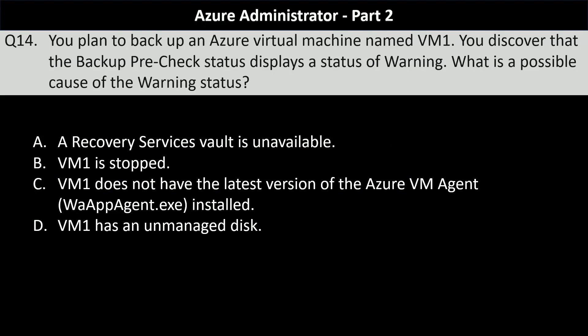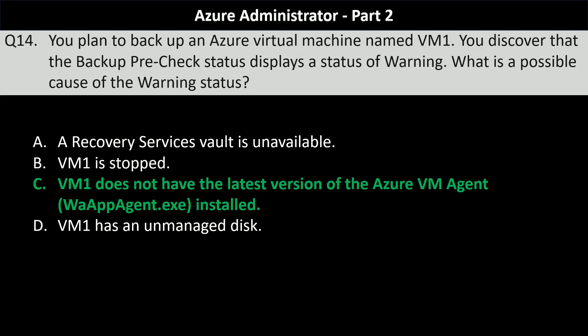Next question. You plan to back up an Azure virtual machine named VM1. You discover that the backup pre-check status displays a warning. What is the possible cause of the warning status? Your options are: a recovery services vault is unavailable, VM1 is stopped, VM1 does not have the latest version of the Azure VM agent (waappagent.exe) installed, or VM1 has an unmanaged disk. The correct answer is that VM1 does not have the latest version of the Azure VM agent installed, as an outdated or incompatible agent version can lead to warnings during the backup pre-check process.